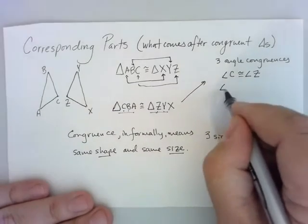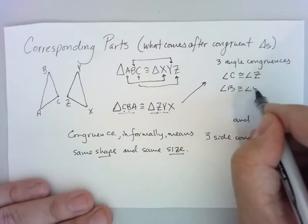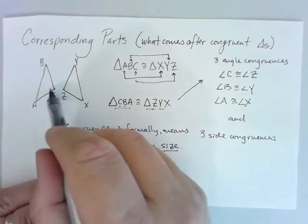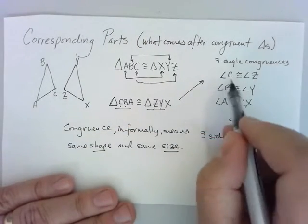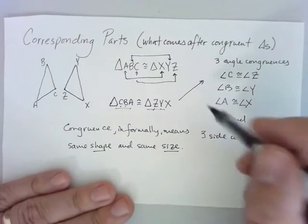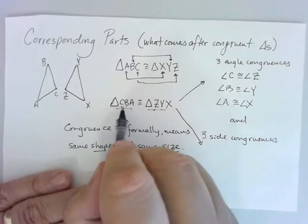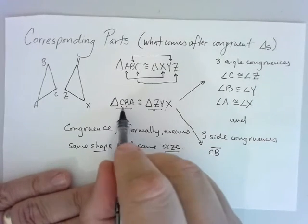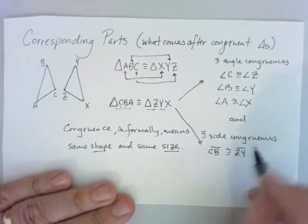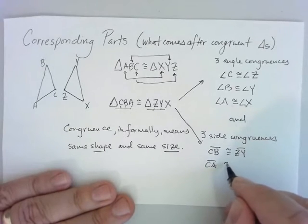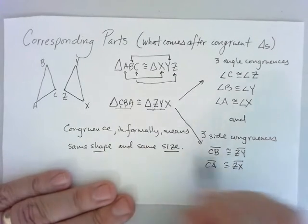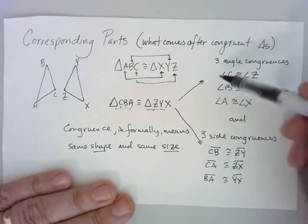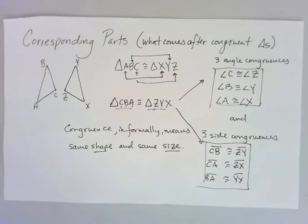Angle A corresponds with angle X — you can see that in the picture, but it's spelled out clearly in the congruence statement. For the sides, I can say segment CB is congruent to segment ZY, segment CA is congruent to segment ZX, and segment BA is congruent to segment YX. You can deduce all six of these things from the fact that you know the triangles are congruent.